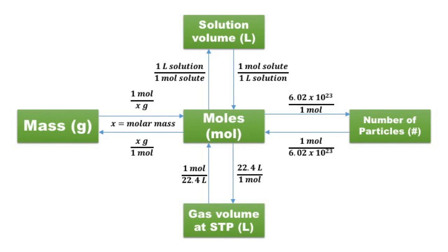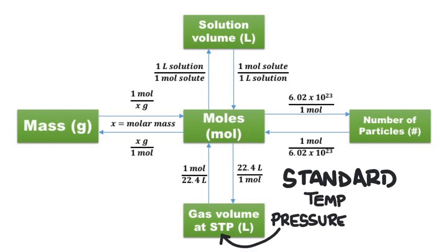To convert between moles of a gas and the volume of a gas, we will use the volume of 1 mole of a gas at STP. STP stands for Standard Temperature and Pressure, where the standard temperature is 273 Kelvin or 0 degrees Celsius, and the standard pressure is the air pressure at sea level, 101.3 kilopascals.